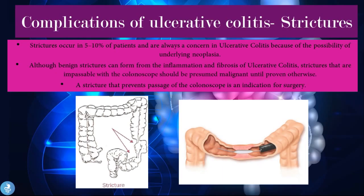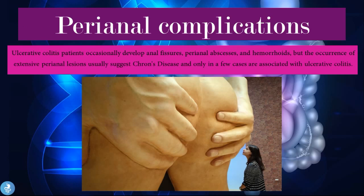Colonic strictures occur in about 5–10% of patients and are always a concern because of the possibility of underlying neoplasia. Although benign strictures can form from inflammation and fibrosis, strictures impassable with a colonoscope should be presumed malignant until proven otherwise, and represent an indication for surgery. Finally, perianal complications: patients occasionally develop anal fissures, perianal abscesses, and hemorrhoids, but extensive perianal lesions usually suggest Crohn's disease rather than ulcerative colitis.